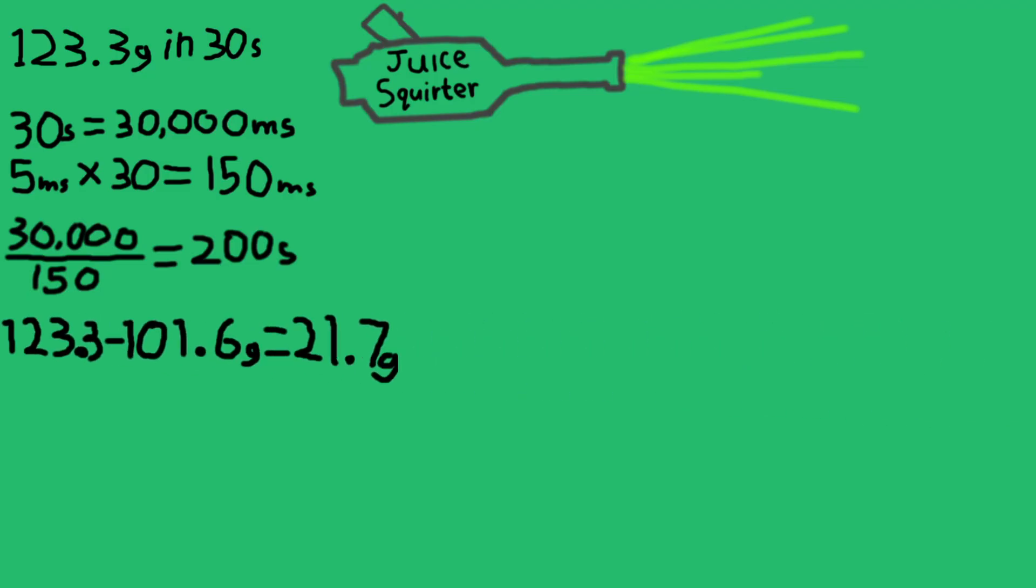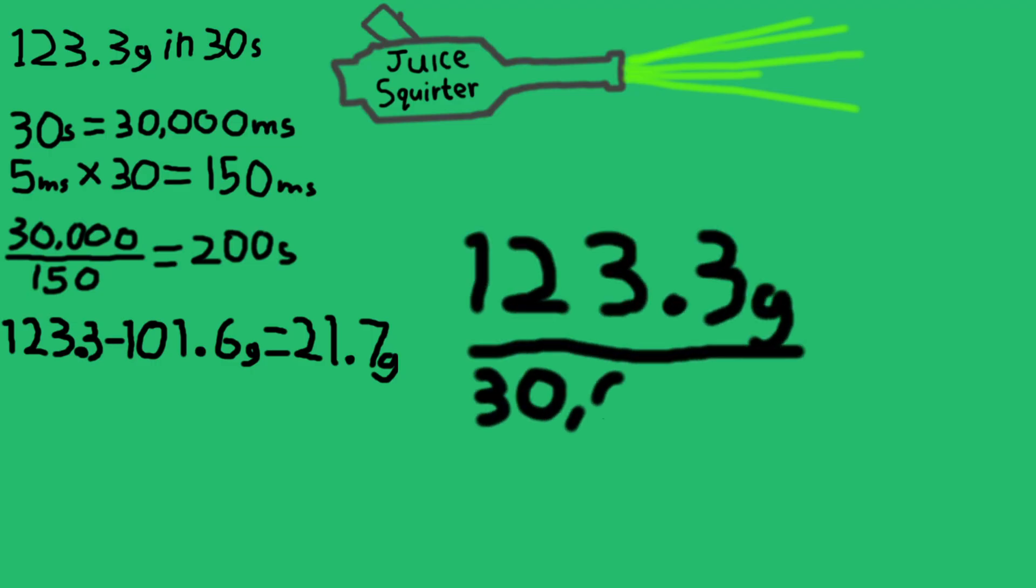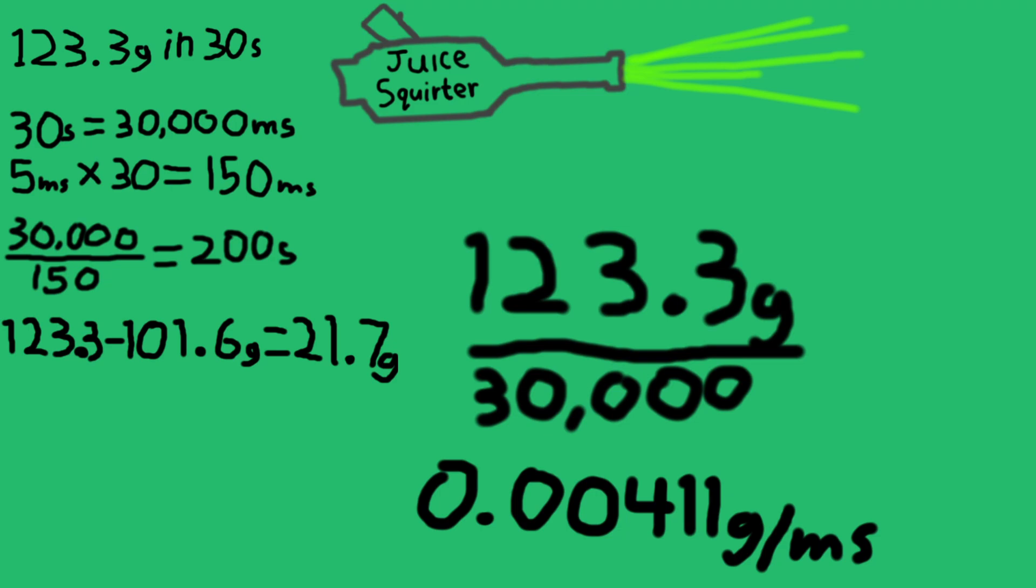In order to do these calculations, we first need to know our flow rate. So, we're going to turn our attention back to our old number of 123.3 grams. Simply divide this by 30,000, and that gives us a flow rate of 0.00411 grams per millisecond. Now,